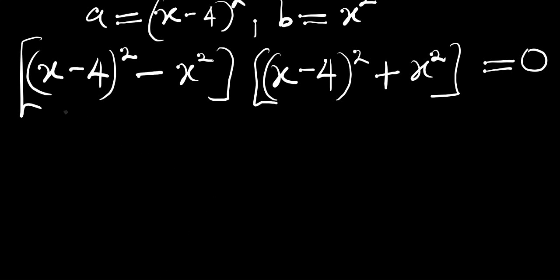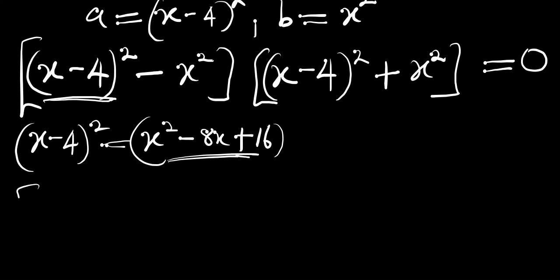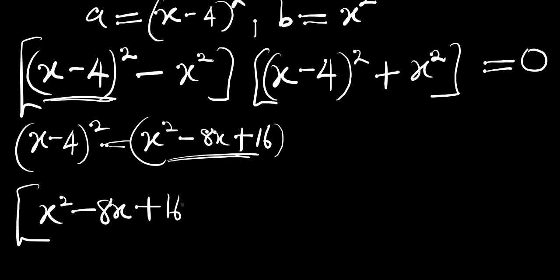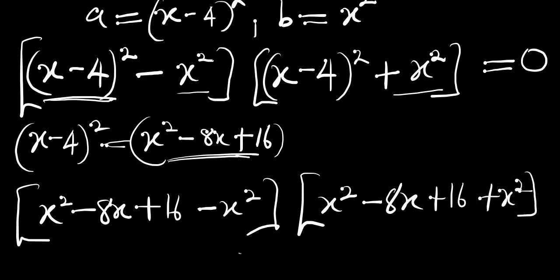Next, let's expand the bracket. (x minus 4) squared gives us x squared minus 8x plus 16. So we replace (x minus 4) squared with that. Our expression becomes: (x squared minus 8x plus 16 minus x squared) times (x squared minus 8x plus 16 plus x squared) equals zero.